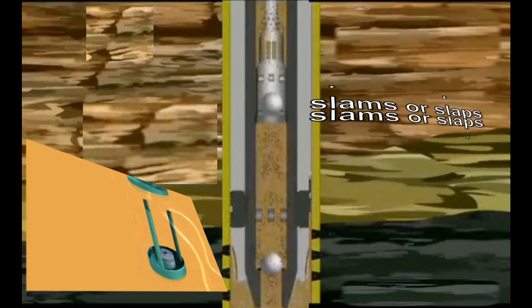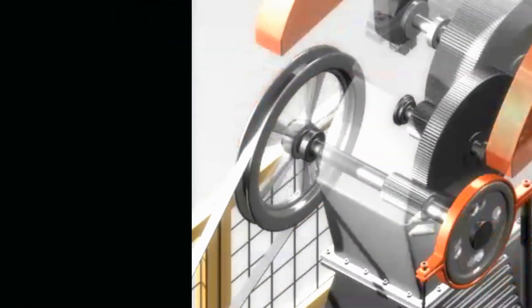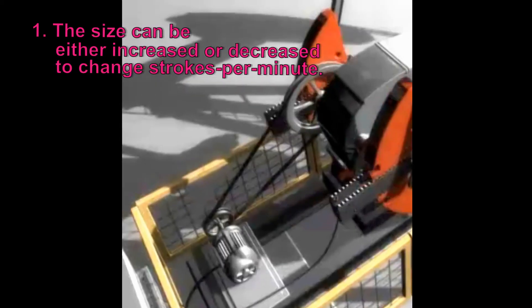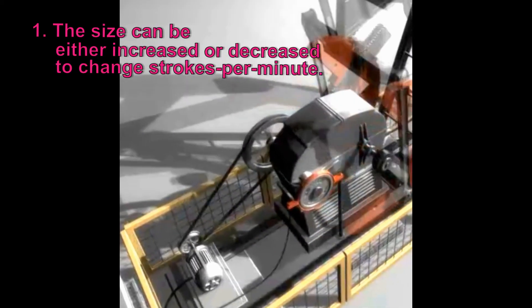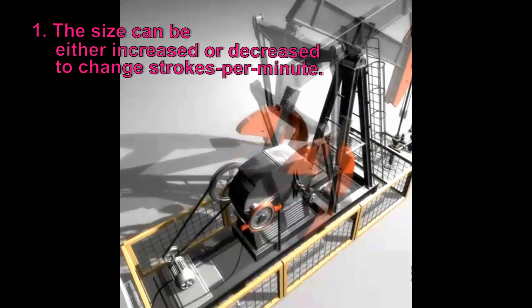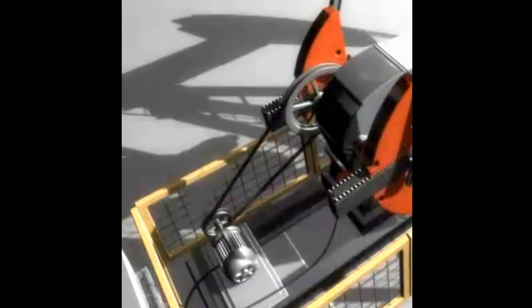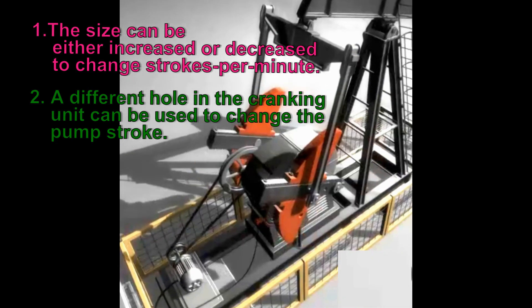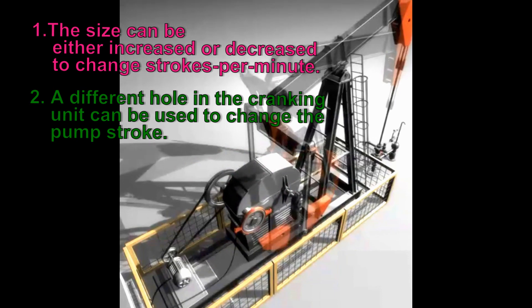There are four main ways that pumping rates can be adjusted to avoid excessive fluid rates or fluid pound. Number one, the size of the V-belt sheave or pulley on the gearbox can be either increased or decreased to change the pumping unit strokes per minute. Number two, a different hole in the pumping unit crank can be used to change the length of the pumping stroke.